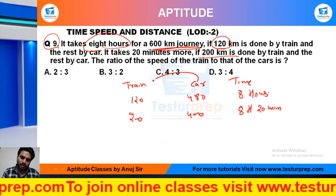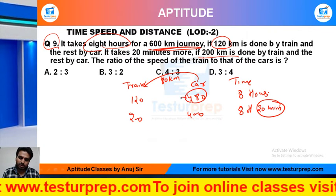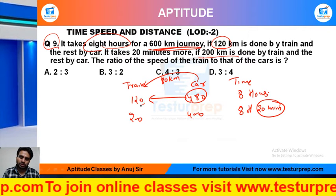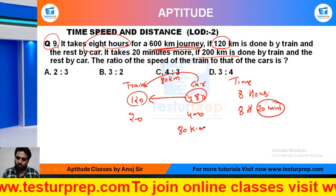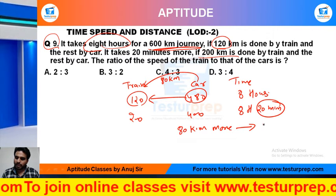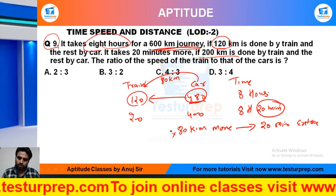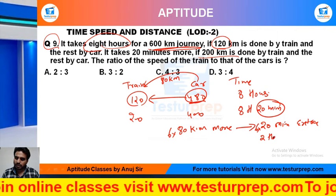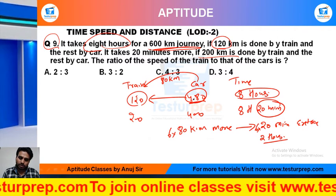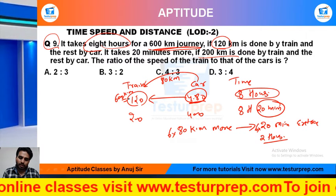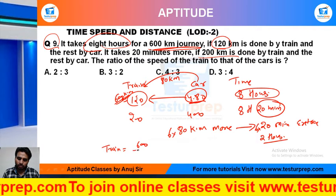When you have 80 km more by train, you get 20 minutes extra. If I move here, the total journey covered by train will be considered. So if 80 km more gives 20 minutes extra, then scaling up — 120 minutes extra corresponds to 480 km more by train, giving a total of 400 km covered by train overall.